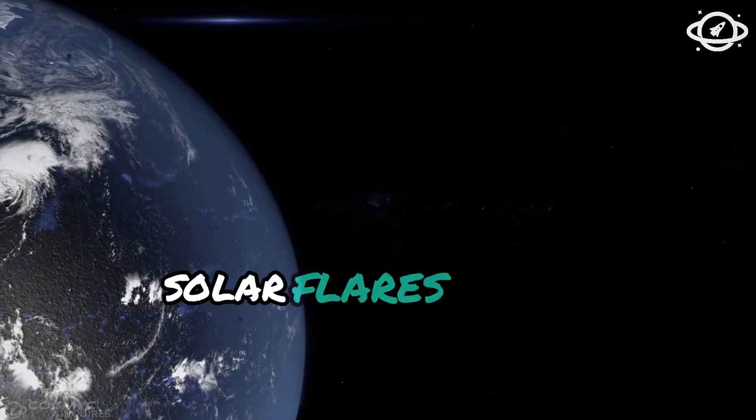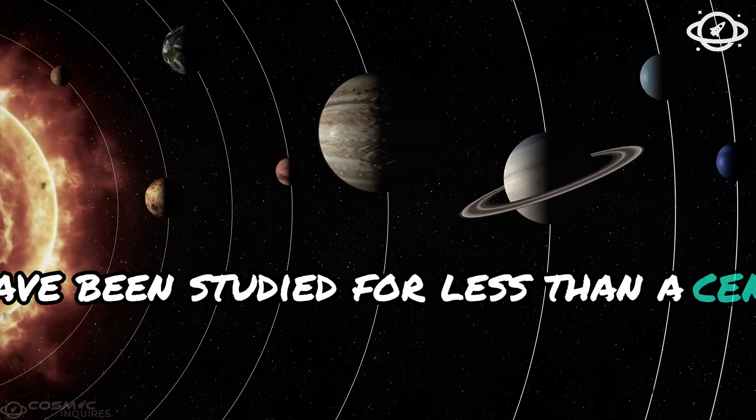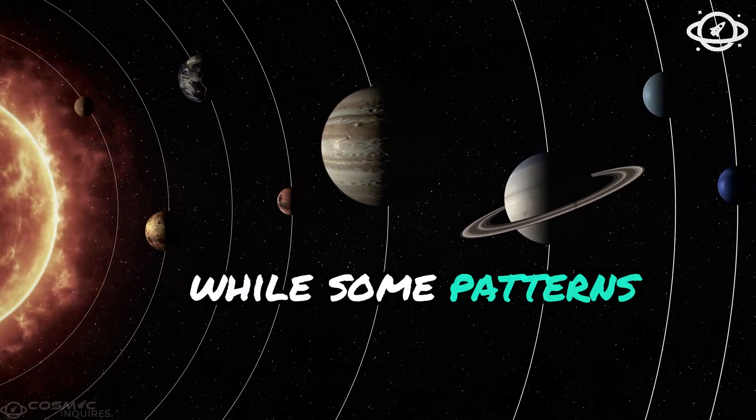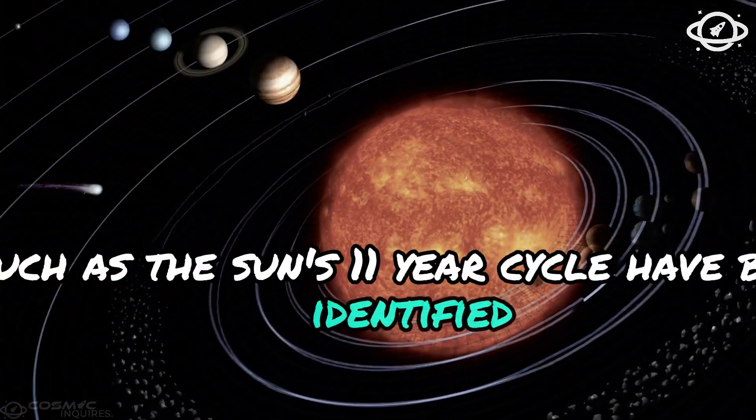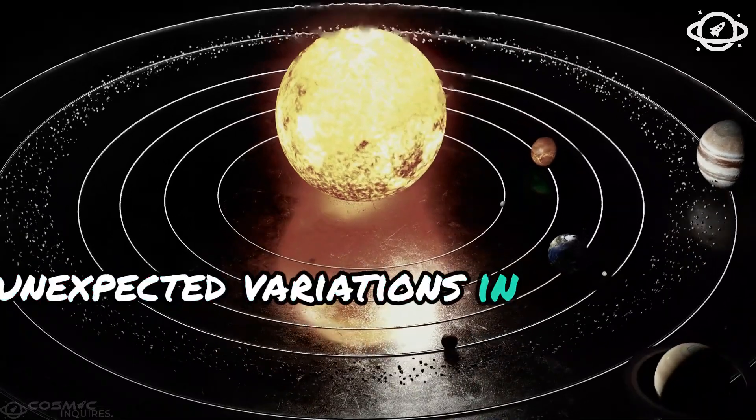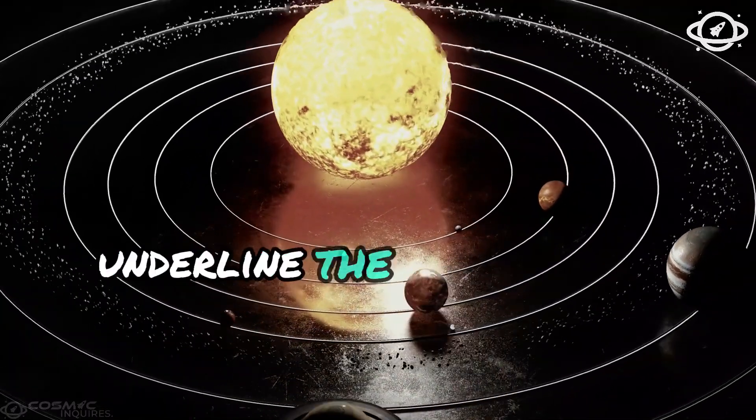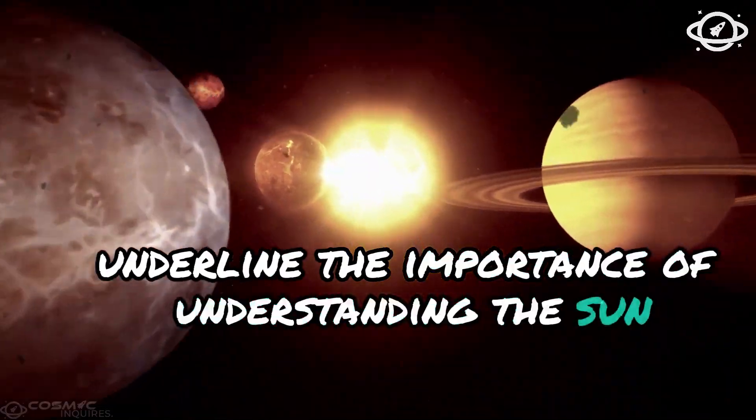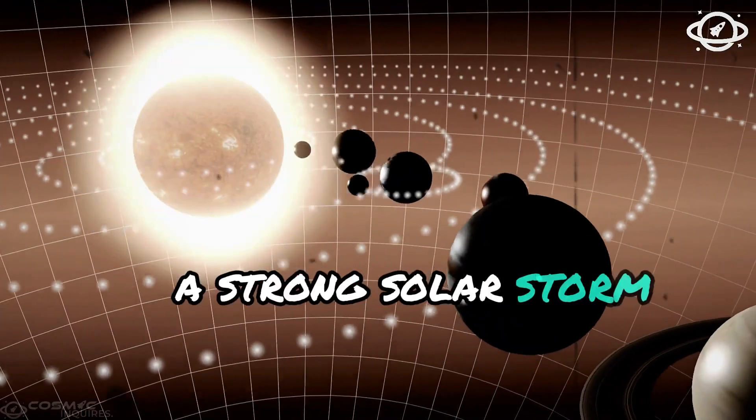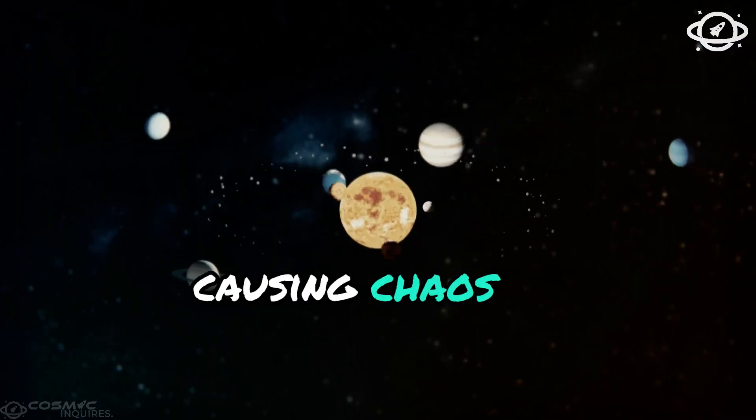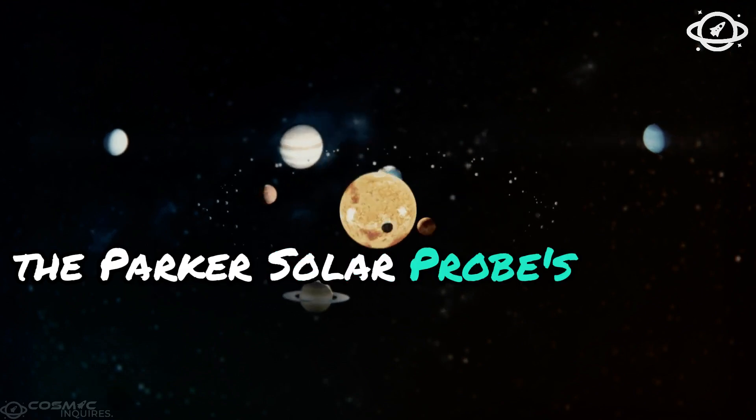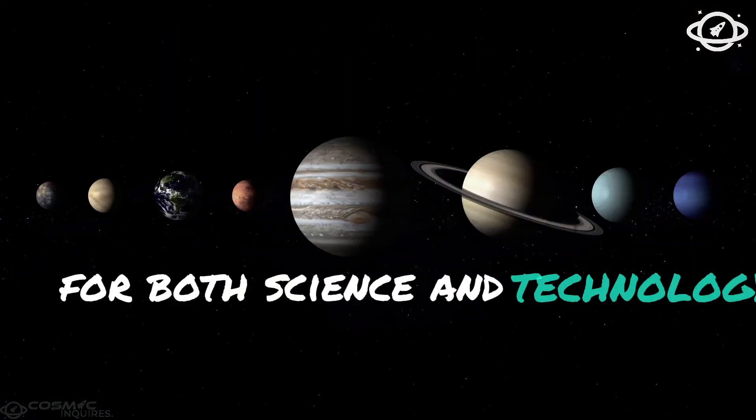Solar flares and winds have been studied for less than a century. While some patterns, such as the Sun's 11-year cycle, have been identified, unexpected variations in solar activity underline the importance of understanding the Sun. A strong solar storm could disrupt Earth's electrical grid, causing chaos. Hence, the Parker Solar Probe's mission is crucial for both science and technology.